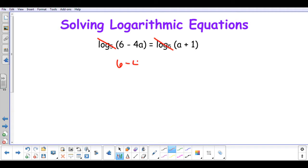And it will bring down the 6 minus 4a equal to the a plus 1. Now I can solve for a by adding my 4a to both sides. So 6 will equal 5a plus 1.